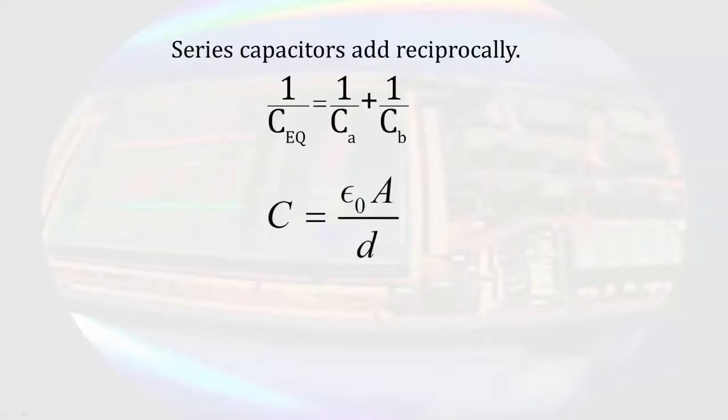To combine series capacitors, we add the reciprocals of the capacitances together. Again, if we think about the equation for parallel plate capacitors, we can think of the distance between the two outer plates increasing, which would reduce the overall capacitance.